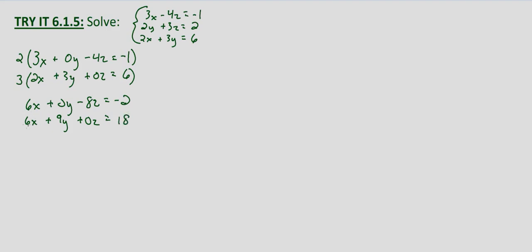Now we could just subtract these, but what I like doing is writing it out with a minus on the outside of the parentheses, then changing it to a plus and changing the sign of everything on the inside. The 0z doesn't matter if it's plus or minus, but we can change it to a minus. And negative 18. Now we can just add them. This way I know the sign is the same. So 6x plus negative 6x is 0, and 0y minus 9y is negative 9y, and negative 8z minus 0z is negative 8z, and negative 2 plus negative 18 is negative 20.